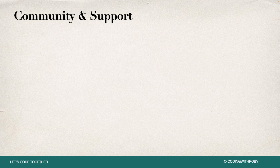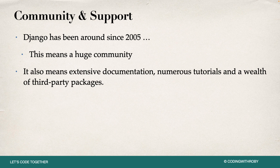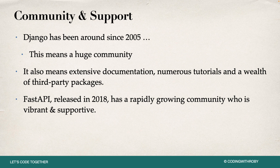Now let's look at community and support. Django has been around since 2005, which means there is a huge community supporting it, extensive documentation, numerous tutorials, and a wealth of third-party packages you can embed within your Django application. FastAPI was released in 2018, but has a rapidly growing, vibrant, and supportive community. Because Django has been around longer, a large number of users are still using it, and many software and legacy applications are built on Django. There are currently four active versions of Django available.